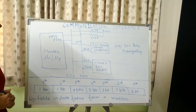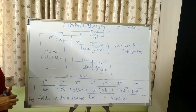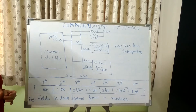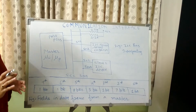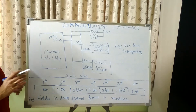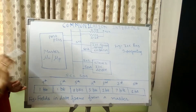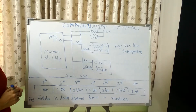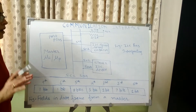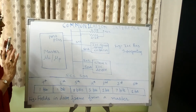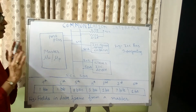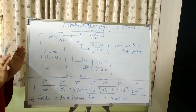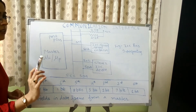The Inter-Integrated Circuit bus is a two-wire synchronous bi-directional half-duplex communication interface. Half-duplex means at a time only one device can communicate. Bi-directional means communication can be between transmitter and receiver or from receiver to transmitter — both directions are possible, but only one device can communicate at a time.